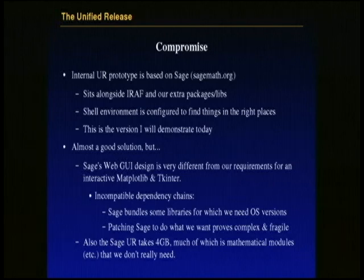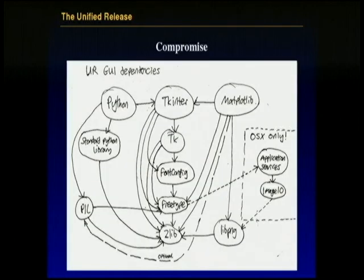So we came up with this compromise that was based on Sage, which was the closest thing to what we needed. It sits alongside IRAF and has extra packages that we've installed in a parallel directory. Then we configure the environment to find the right versions of things in the right places. It was almost a good solution, but one of the stumbling points was that the way Sage uses the web GUI for its notebook has very different assumptions from what we need for using Matplotlib and TKinter. They're bundling a load of their own versions of libraries where we have to link to the OS versions, and that messed things up a bit. It's also four gigabytes, which is containing lots of mathematical stuff that we don't really strictly need.